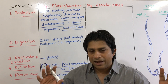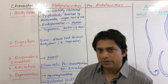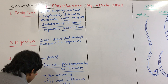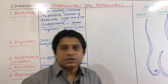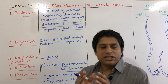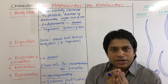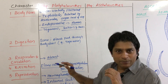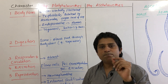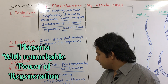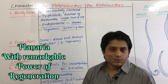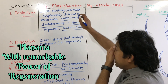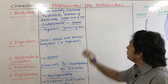Generally sexual reproduction takes place, though asexual reproduction also occurs in some cases. Planaria shows the most remarkable power of regeneration in the animal kingdom — regeneration in Planaria is also a method of asexual reproduction. These are the characters of Platyhelminthes.